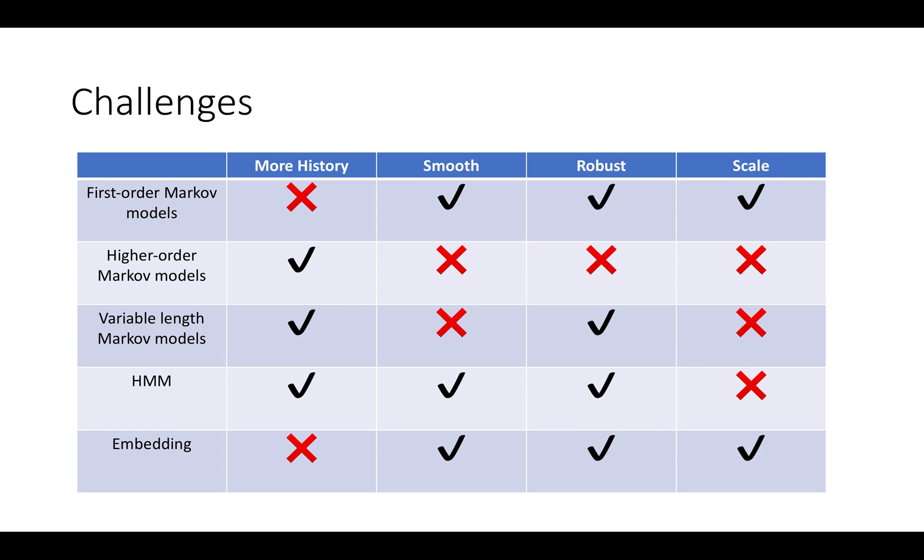A quick comparison is that the first-order Markov model is simple and effective. However, it only utilizes a single history state. As for higher-order Markov models, the smoothness and robustness became a problem as they gave a sharp prediction on the transitions that appear in the training data.